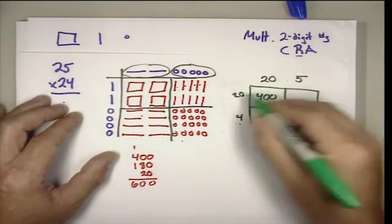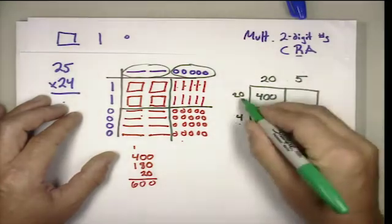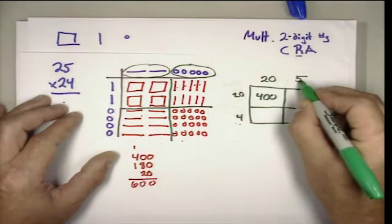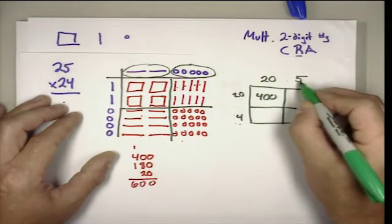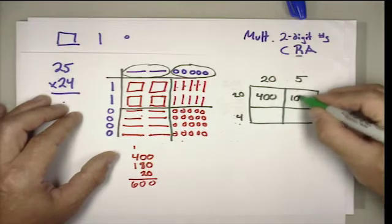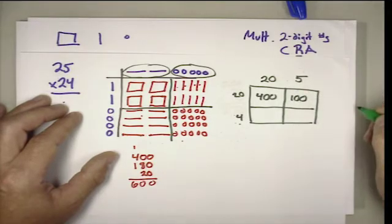In this block we would be multiplying twenty times five. That's ten times one, ones. Ten times ones is tens. And so I have five times two, that's ten tens, or one hundred.